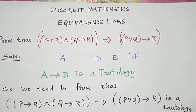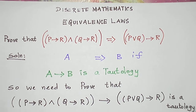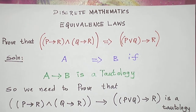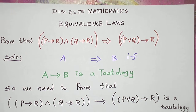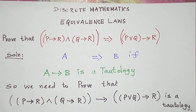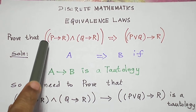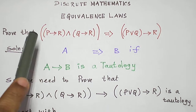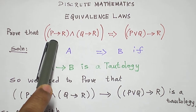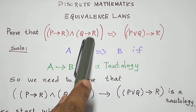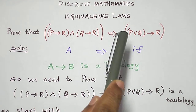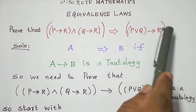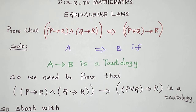Hello students, today let us see a problem in equivalence laws in the subject discrete mathematics. We are asked to prove that the statement formula P conditional R and Q conditional R implies another statement formula P or Q conditional R.